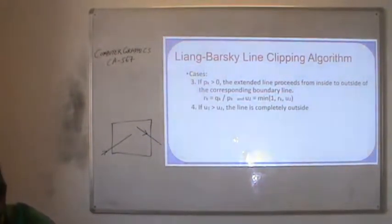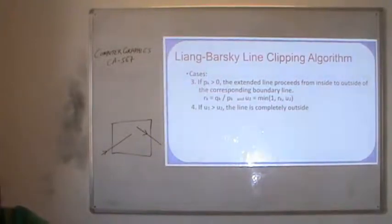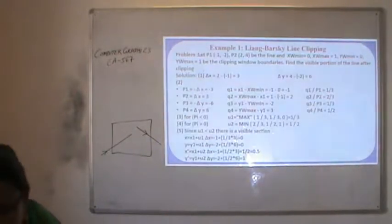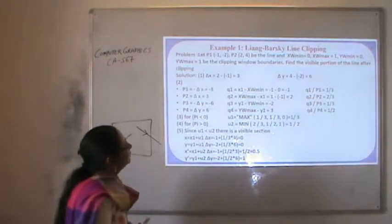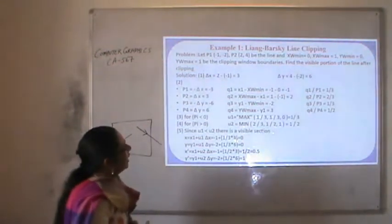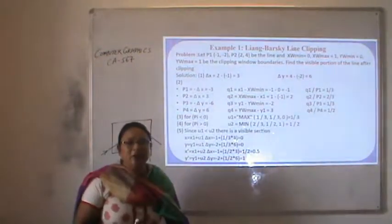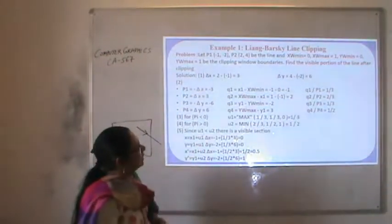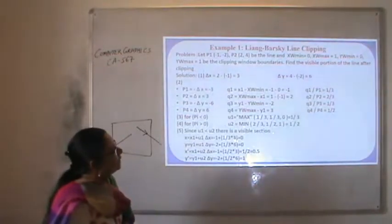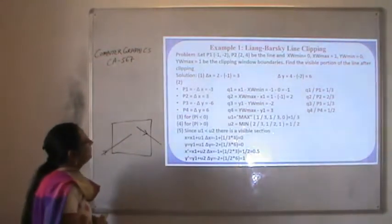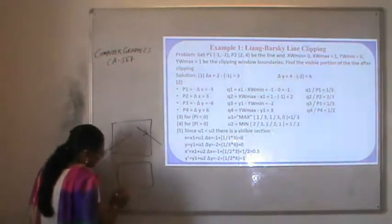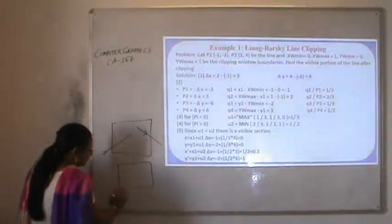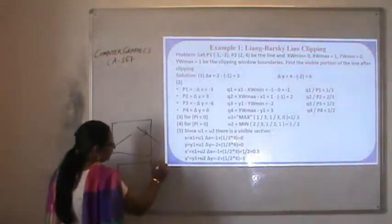These are the steps required to apply the Liang-Barsky line clipping algorithm. Now I will show you an example. Suppose there is a line with two points p1 and p2, with coordinates given, and the clipping window boundaries xw-min, xw-max, yw-min and yw-max are also given. In this case, the clipping window goes from (0,0) to (1,1).